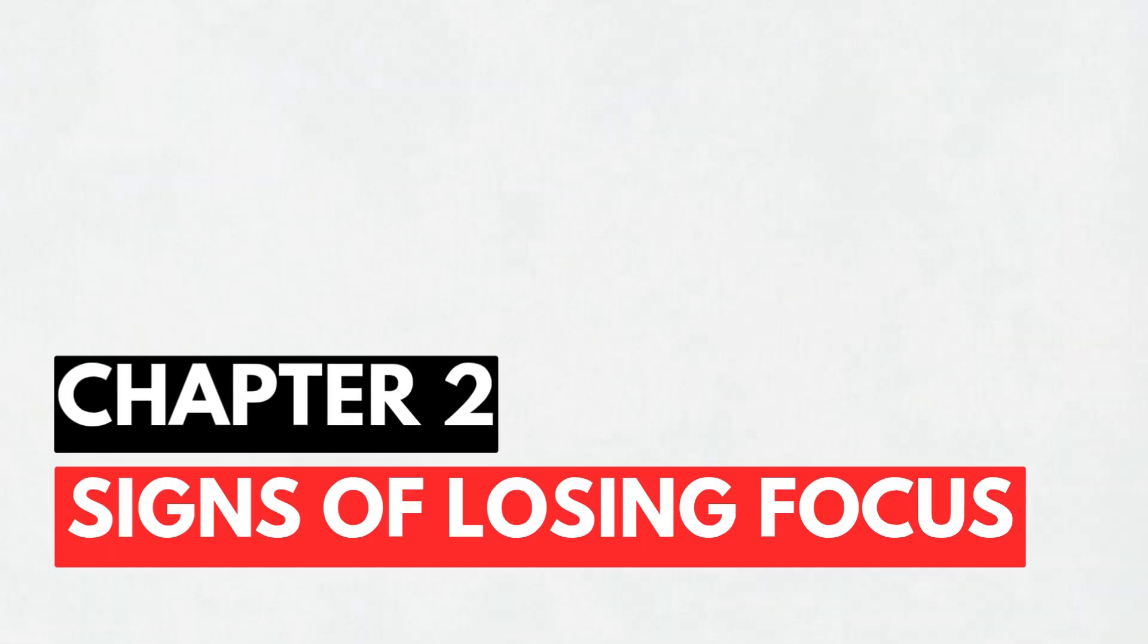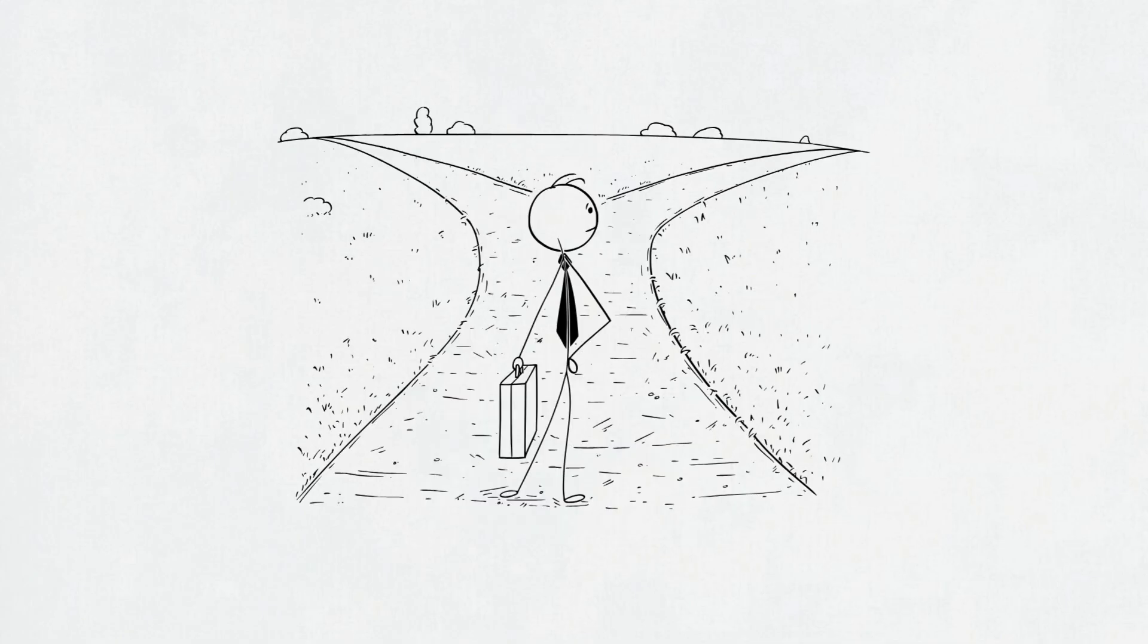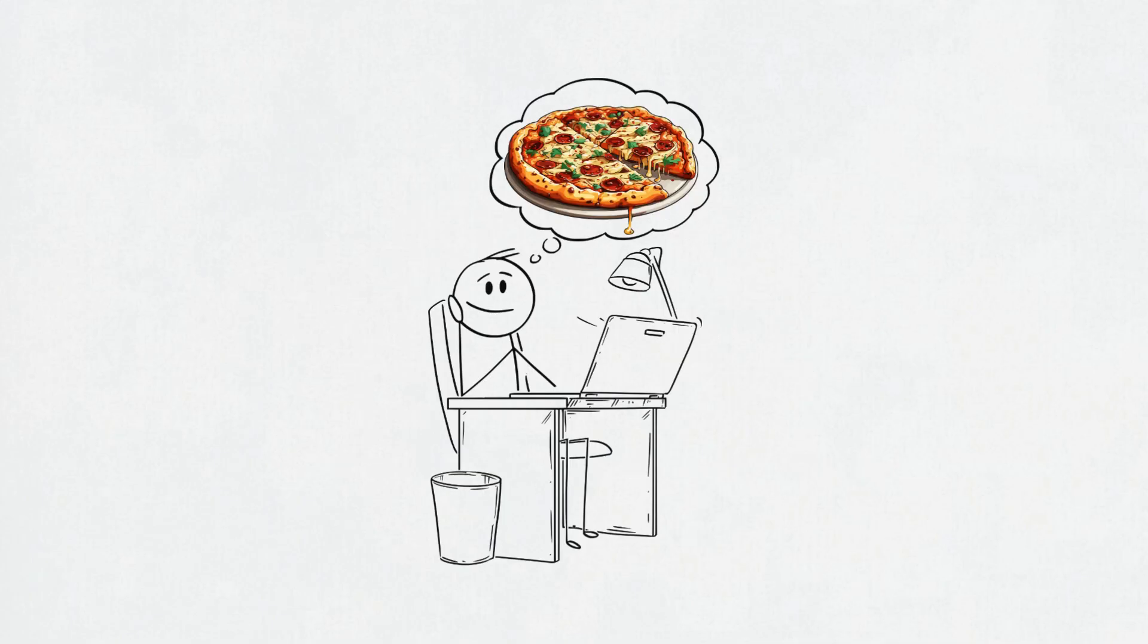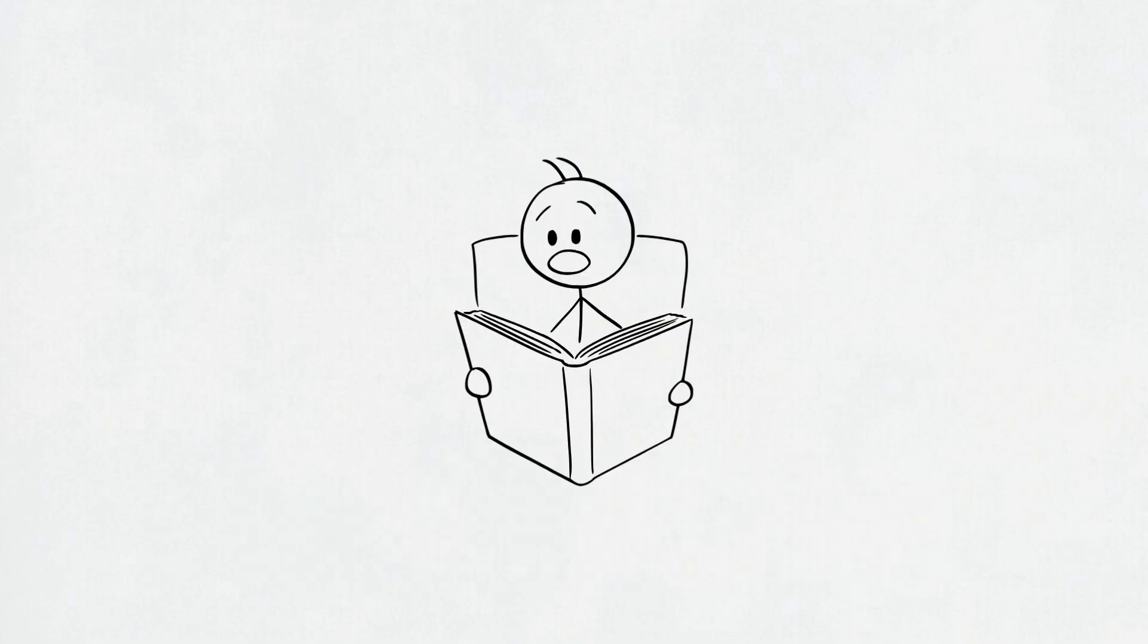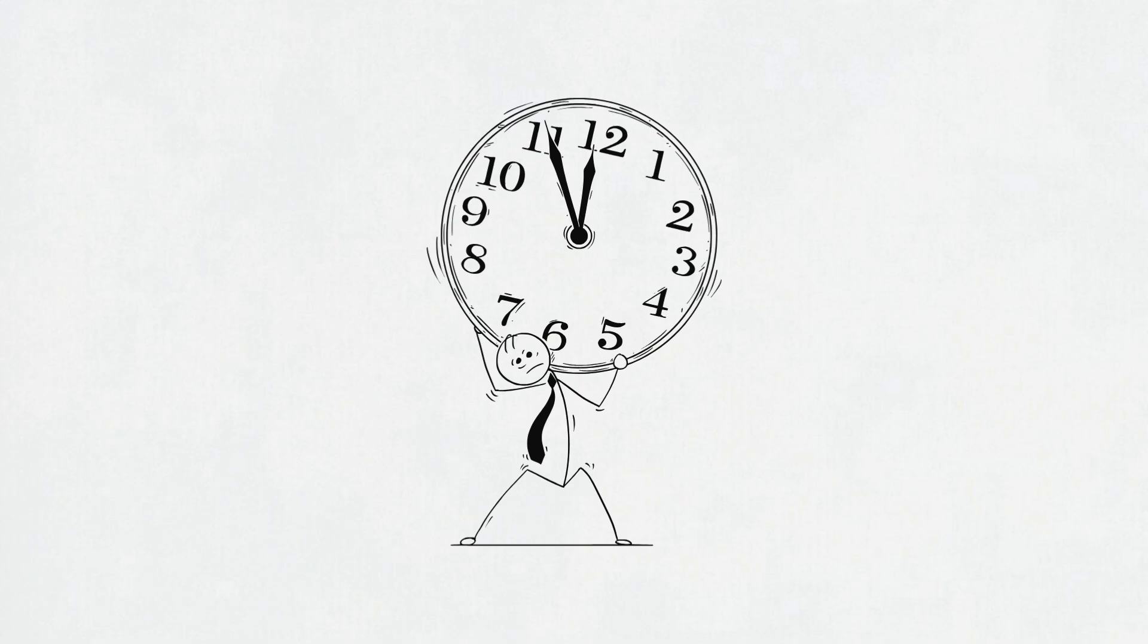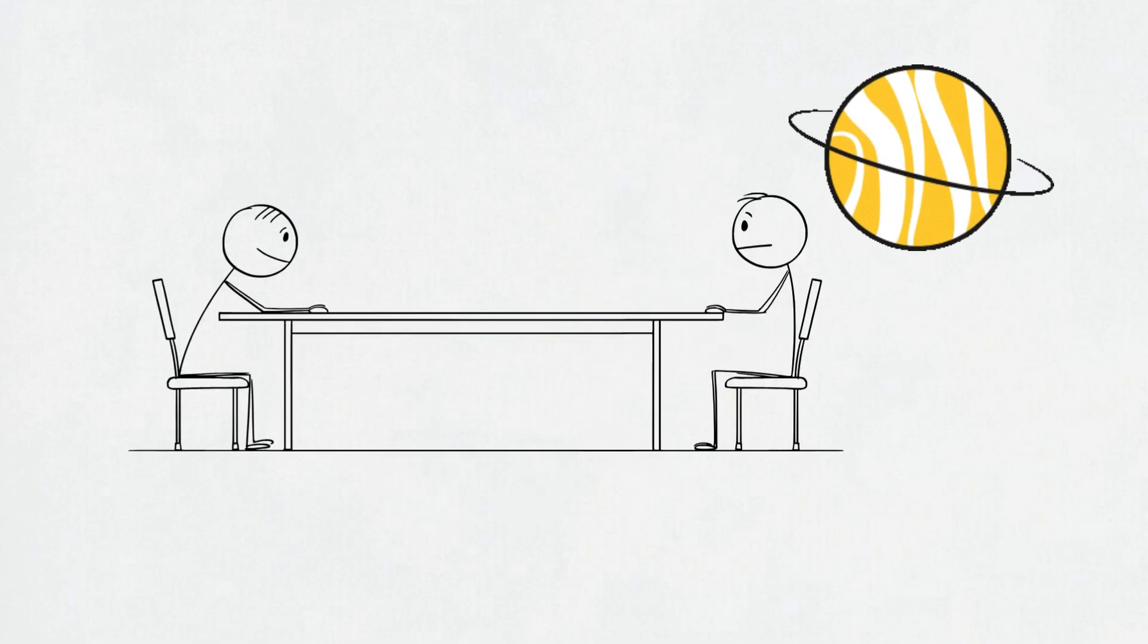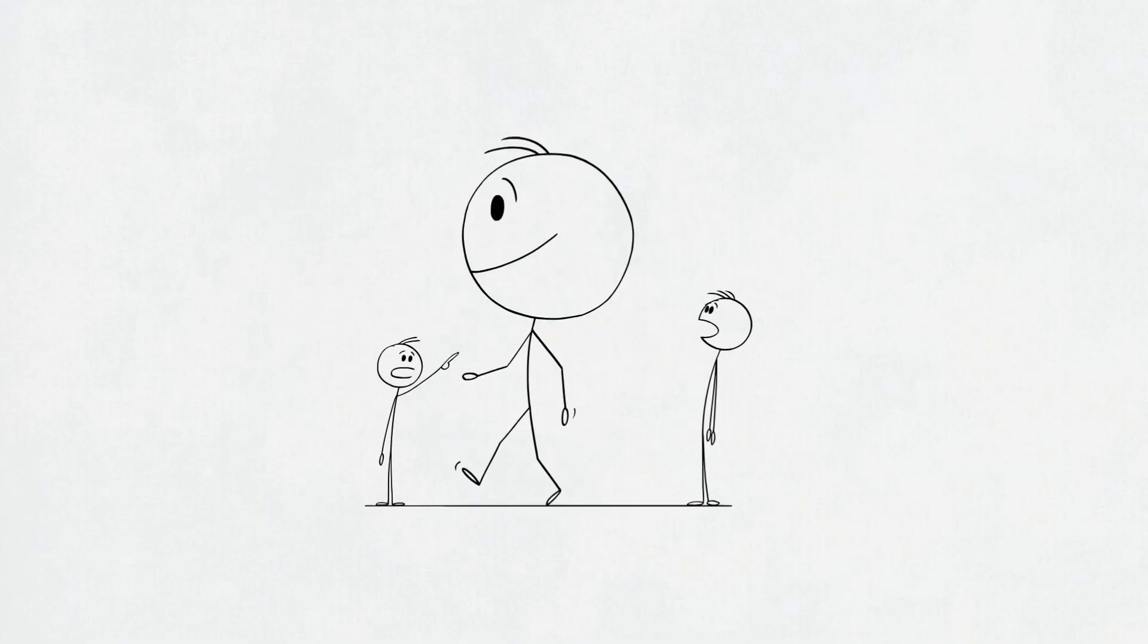Chapter 2. Signs your focus is basically ghosting you. So, how do you know your focus didn't just step out, but fully left the building? Here's how it shows. You zone out like it's a full-time job. One second, you're working. Next, you're thinking about pizza or cringing at 2017 you. You start tasks, then poof. Suddenly, you're googling, do plants feel pain? You reread the same line five times and still don't know what it says. You make silly mistakes your brain should have caught. You say, I'll start in five minutes like it's a mantra. You jump between apps like it's the Olympics. You're in conversations, but mentally tuned to another planet. Basically, your brain's buffering. A lot. But hey, these aren't character flaws. Just signs your brain needs a reboot. Good news? That reboot's next.